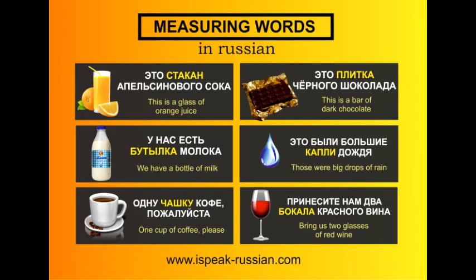Это стакан апельсинового сока. — This is a glass of orange juice. Это плитка черного шоколада. — This is a bar of dark chocolate. У нас есть бутылка молока. — We have a bottle of milk. Это были большие капли дождя. — Those were big drops of rain.